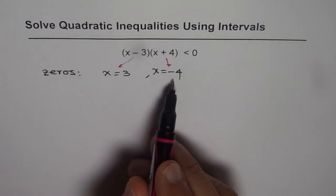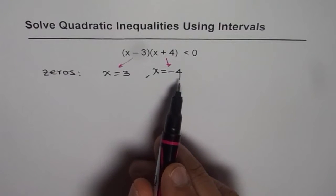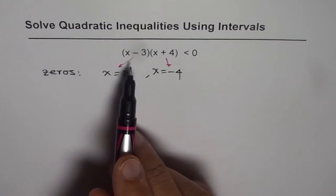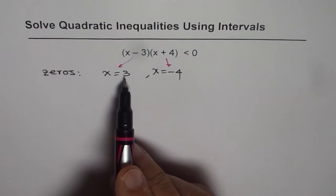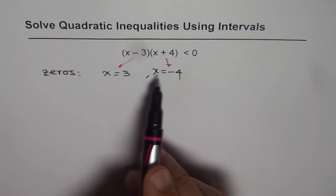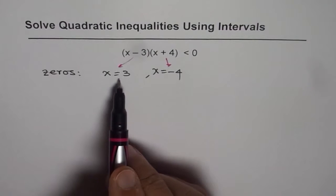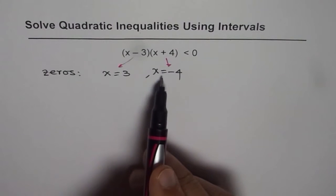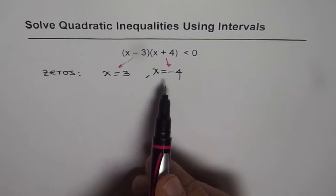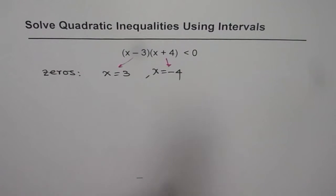Now once we know where the zeros are, then we know that a quadratic function is a continuous graph. So it is going to cross the x axis at these zeros. We need to now figure out whether it is positive or negative on either side of the zero. That is what we need to figure out. So what we can do is we can analyze both sides of the zeros and that is the gist of it.